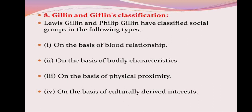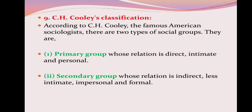Gillin and Gillin's classification is based on: blood relation, bodily characteristics, physical proximity, and culturally derived interest. C.H. Cooley's classification divides social groups as primary group and secondary group. A primary group has direct, intimate, and personal relationships. A secondary group has indirect, less intimate, impersonal, and formal relationships.